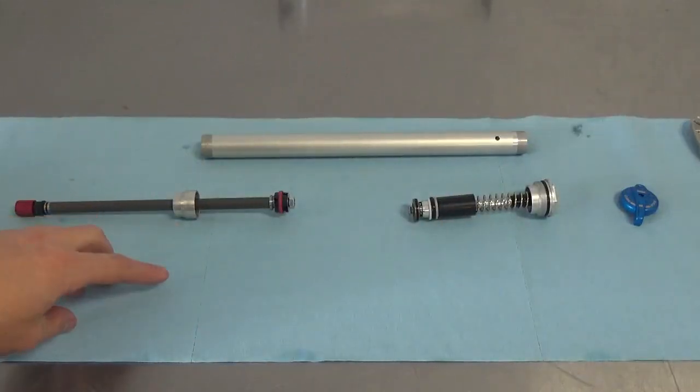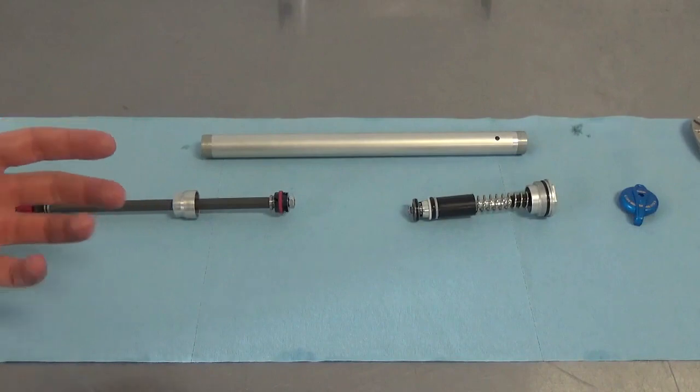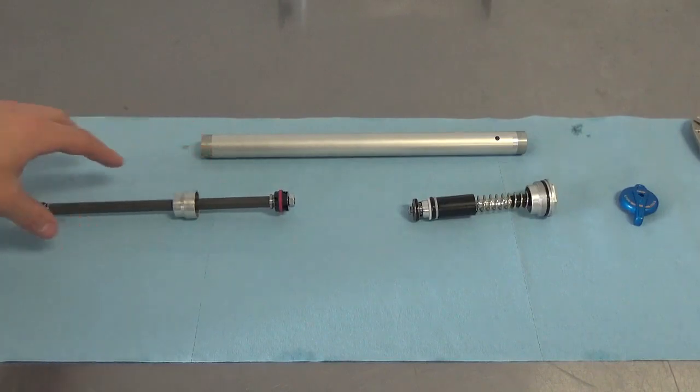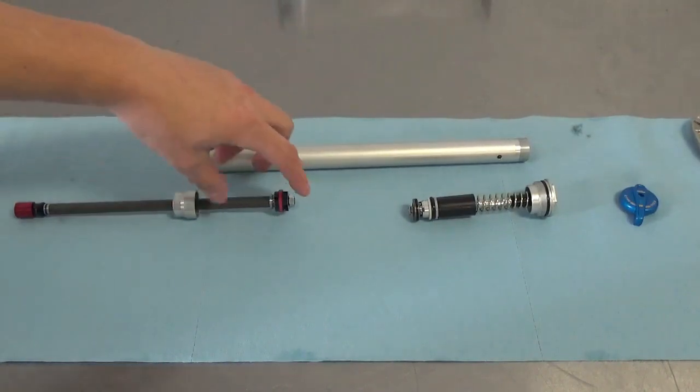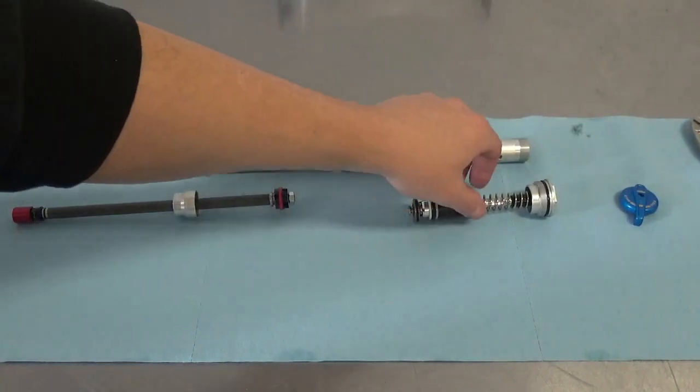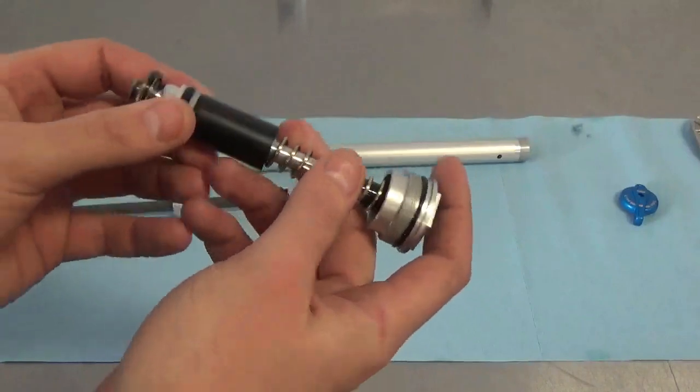So the basic layout of this damper cartridge is fairly similar to a Fit cartridge in some senses. That is that you have your rebound adjuster and your rebound assembly at the bottom of the fork, and your compression assembly up the top. This is the damper tube here. This is the rebound piston, compression piston.